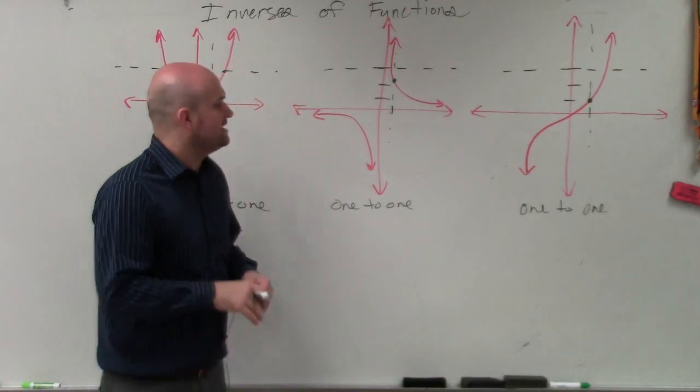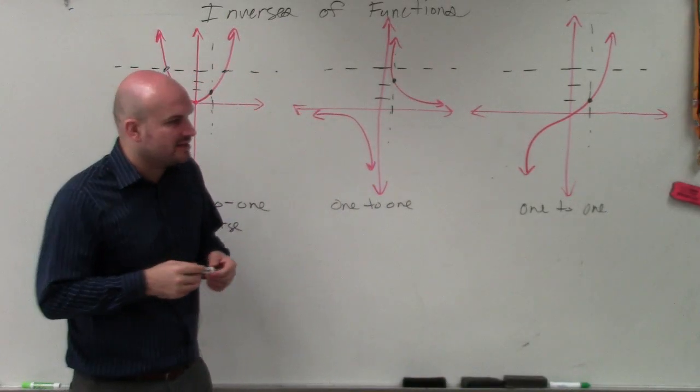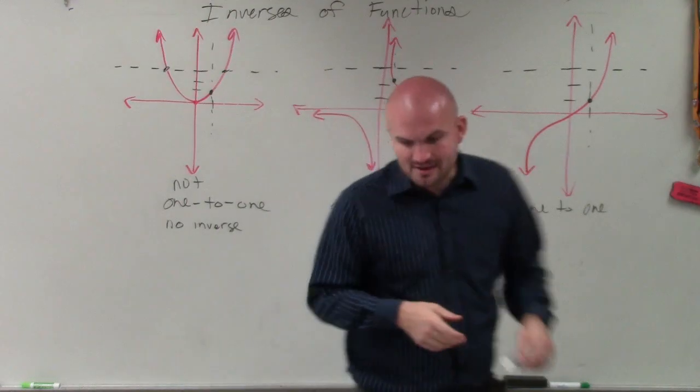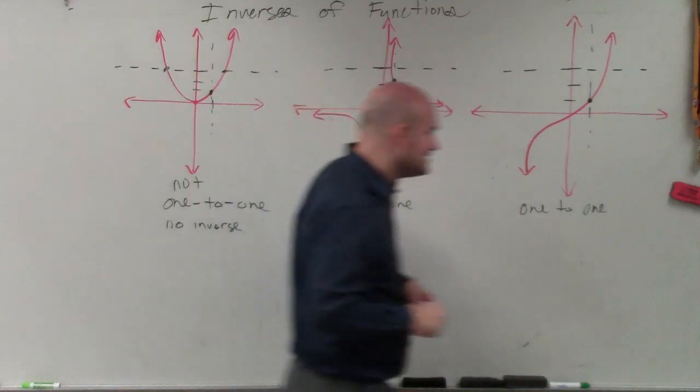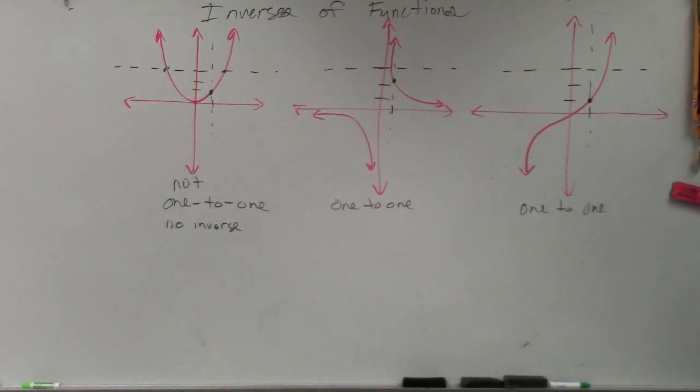All right? You guys can write down the definition and I can give it to you, but as long as you guys understand the horizontal line test, that's the most important thing. OK. So what exactly, so now that we know that has an inverse, how can we go ahead and use that to our advantage?